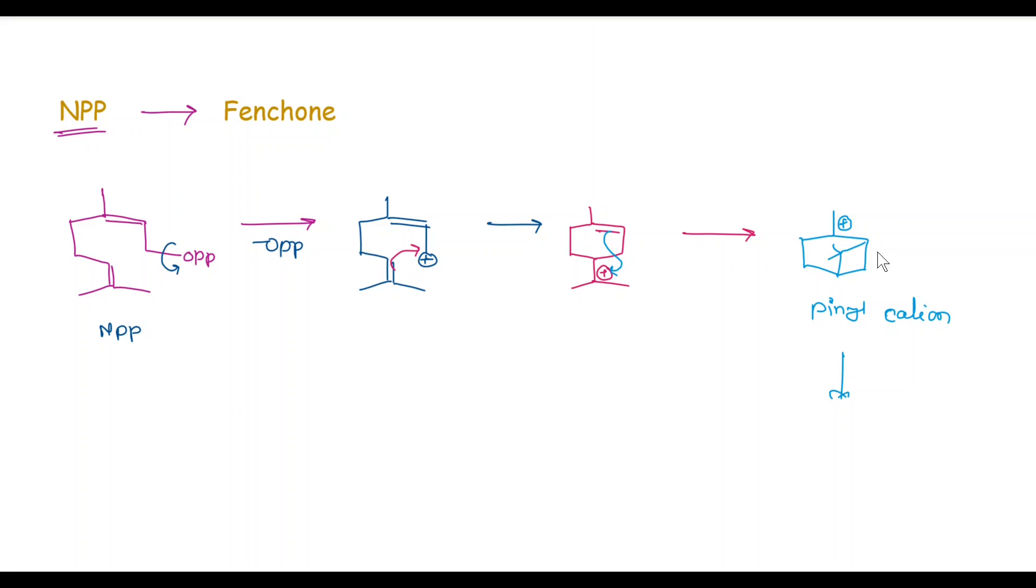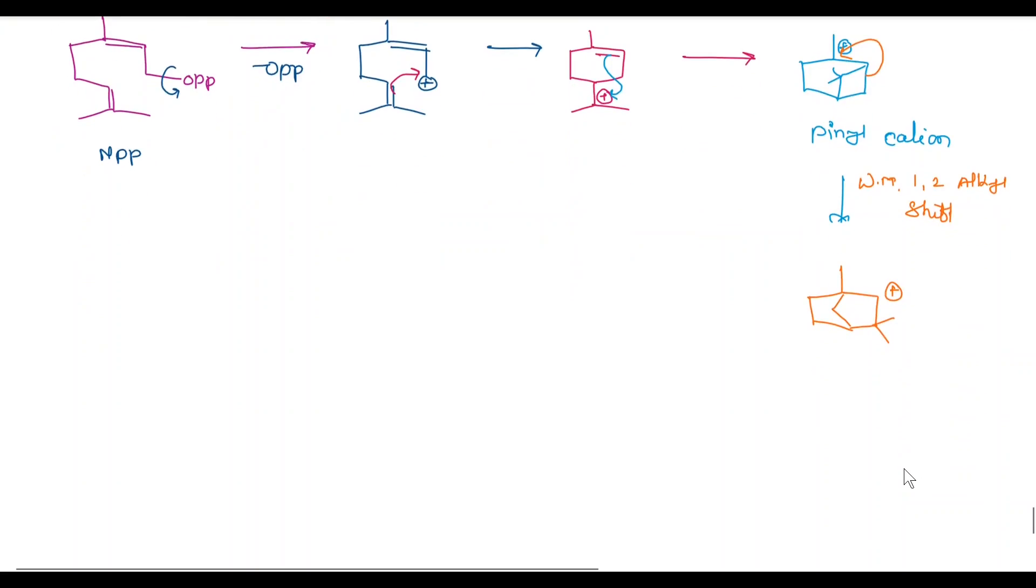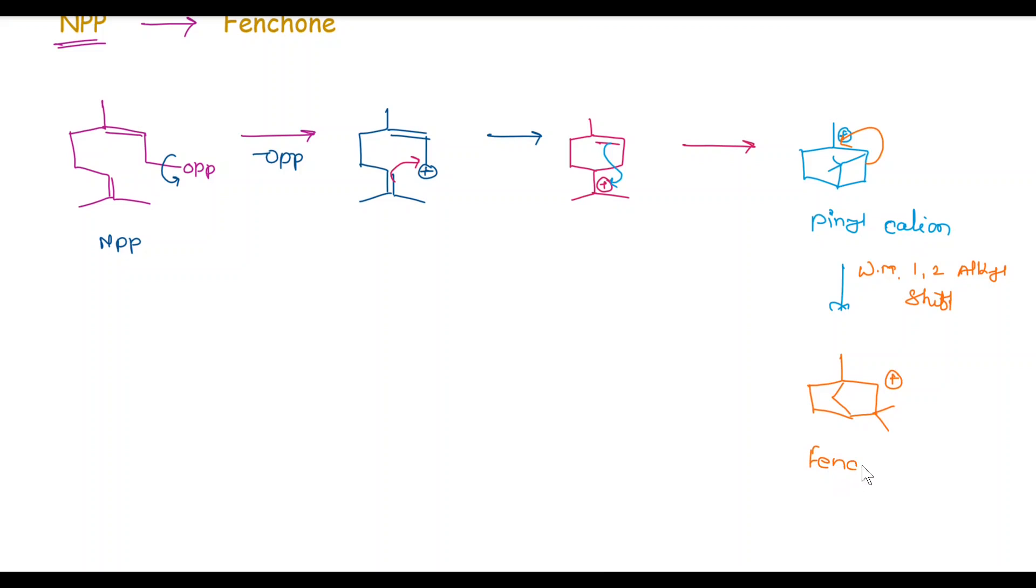In the next step, Wagner-Meerwein 1,2-alkyl shift takes place and we get another new cation, and this cation is called fenchyl cation.